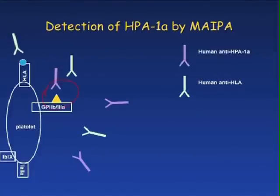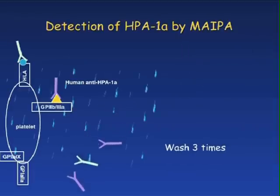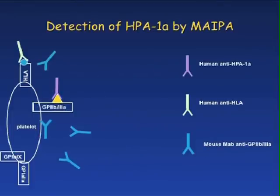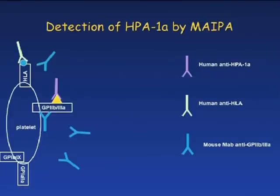Here we have the first part of the assay. HPA typed platelets are incubated with serum from the patient which we are investigating. After washing, any unbound antibodies are removed and then we add a mouse monoclonal antibody against glycoprotein 2b3a as this is where the HPA1A antigen is located.